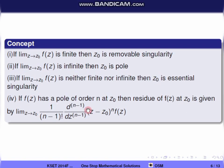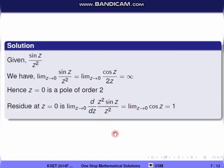If f(z) has a pole of order n at z0, the residue of f(z) at z0 is given by: limit z tends to z0 of 1/(n minus 1) factorial into the (n minus 1)th derivative of (z minus z0)^n times f(z). Now let's apply this to our function sin(z)/z².